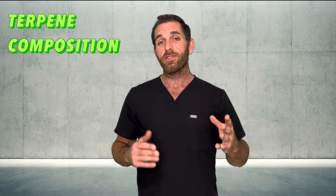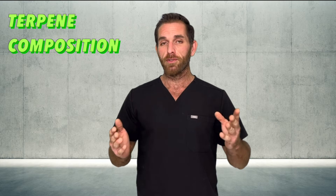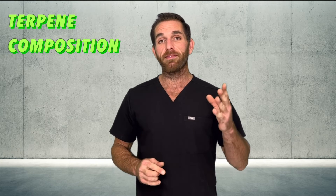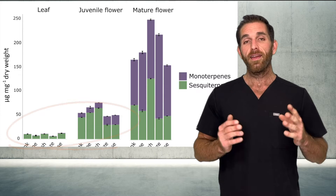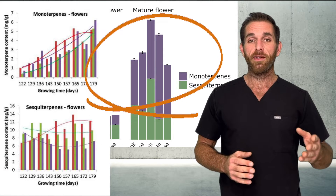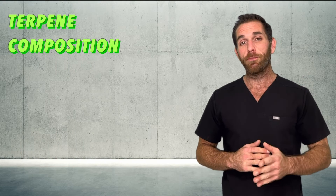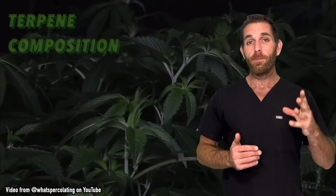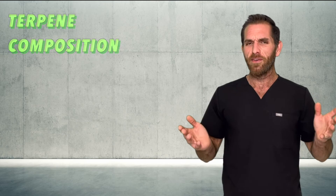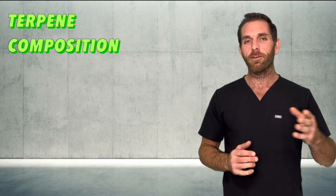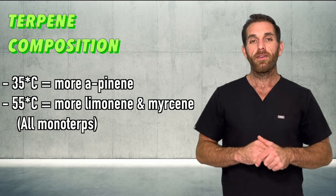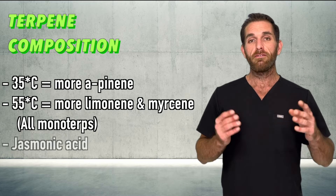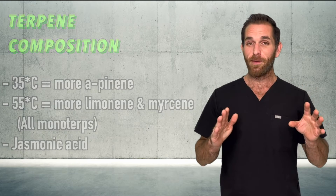The cannabis we consume is always going to be determined by genetics, but the environment plays an important role as well. Researchers have confirmed a trend between the types of terps produced throughout a plant's life cycle: most terps initially produced in flowers and fan leaves are sesquiterpenes, but the proportion of monoterps dramatically increases over time as flowers develop from juvenile to mature. Cannabis will even cause terpene fluctuations throughout the day — the diurnal pattern of light literally gives life to the plant. Studies have also confirmed that terpenes are dependent on light and heat: at around 35°C alpha-pinene was more dominant, whereas at 55°C limonene and myrcene emissions were far more dominant.